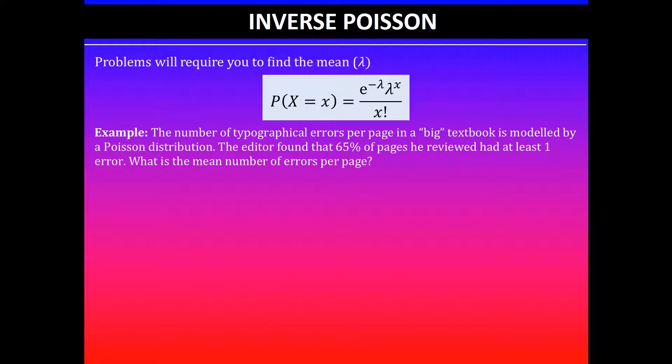We'll look at an example. In this question it says the number of typographical errors per page in a big textbook is modeled by a Poisson distribution.